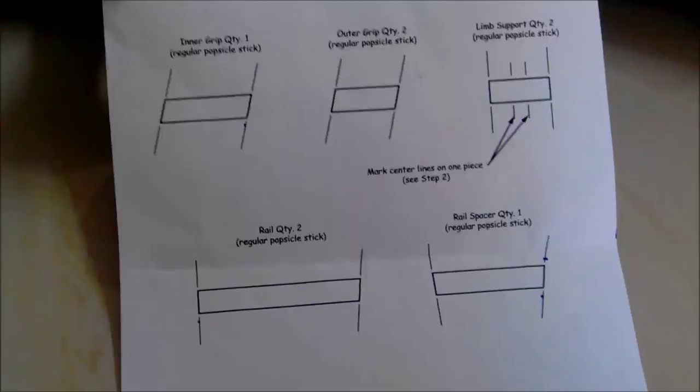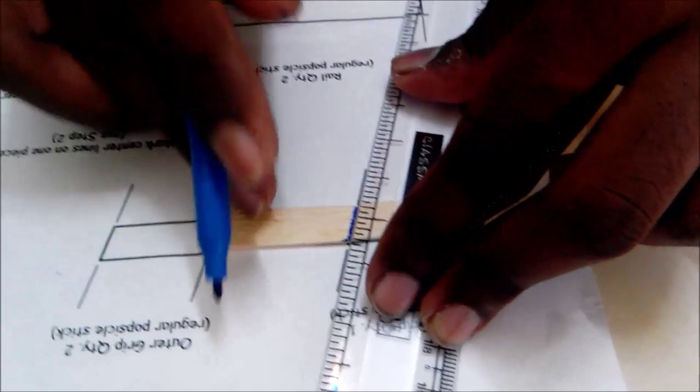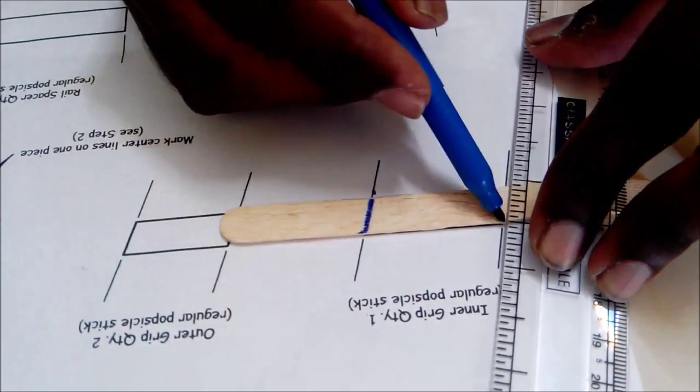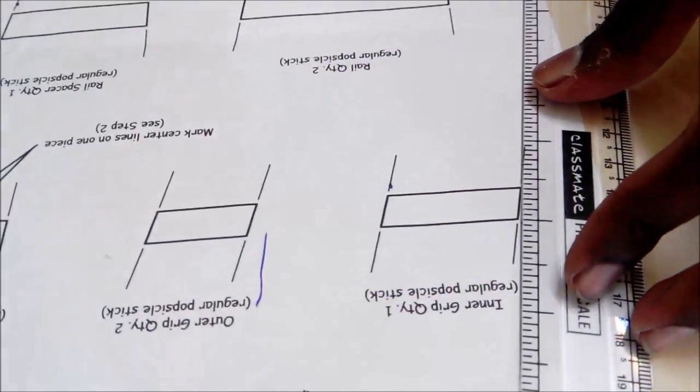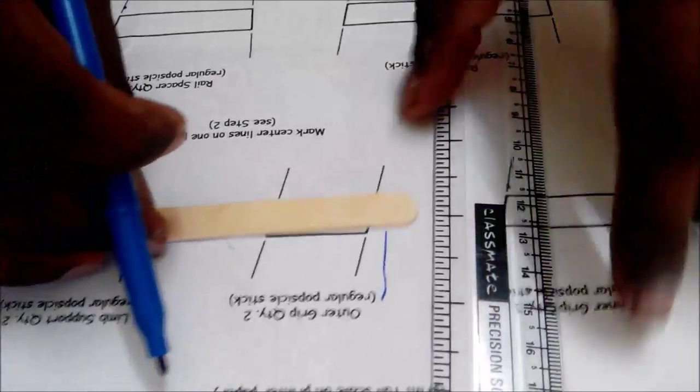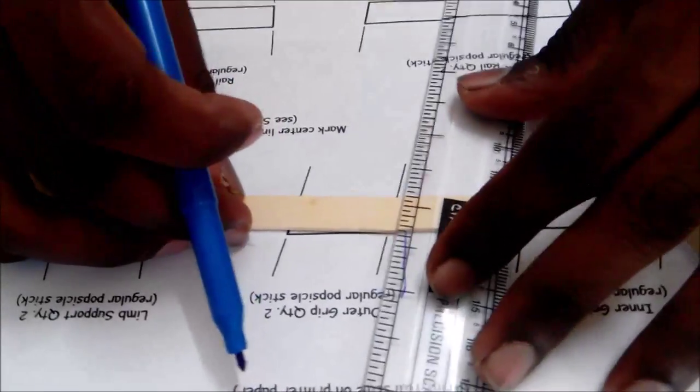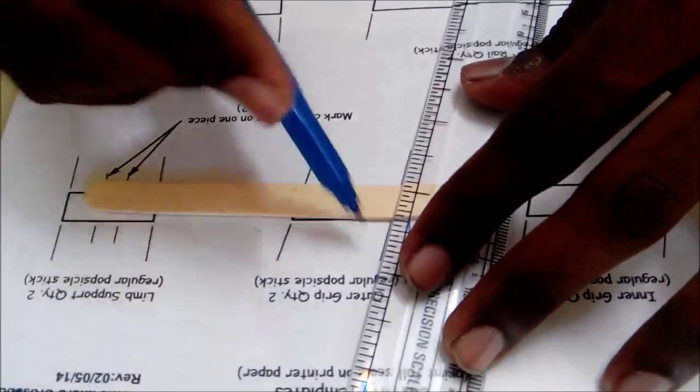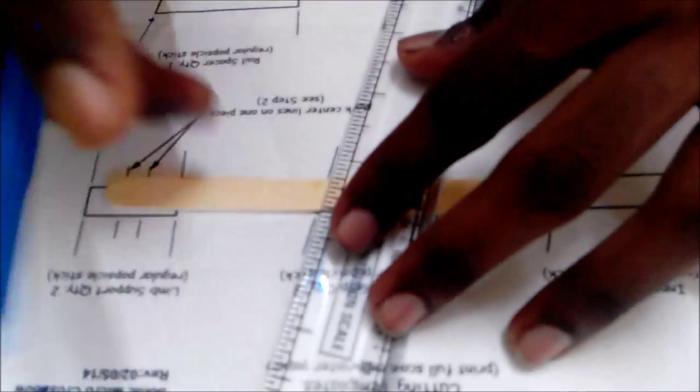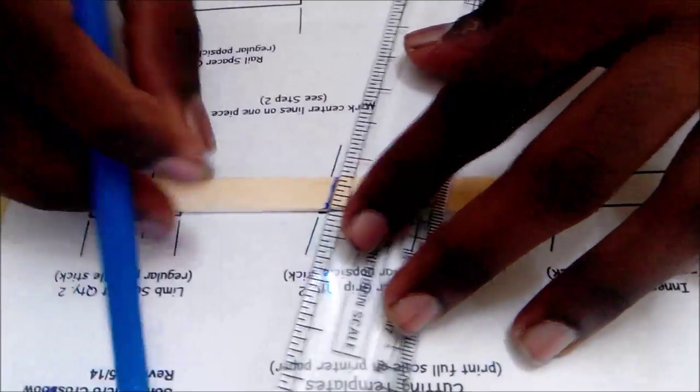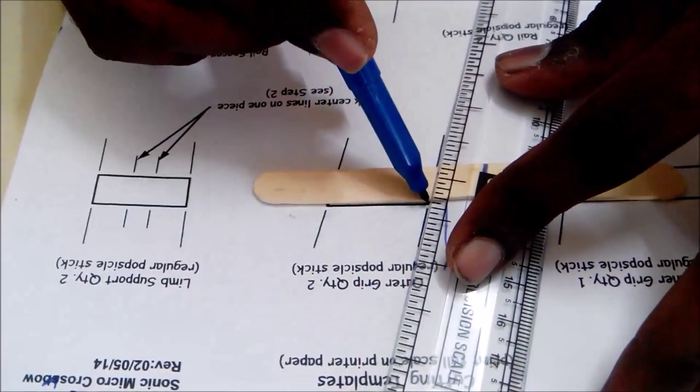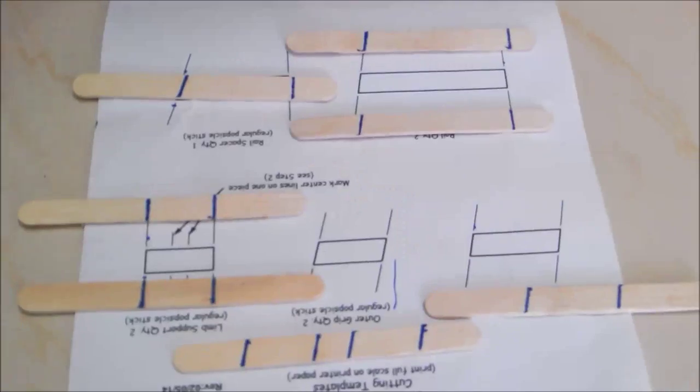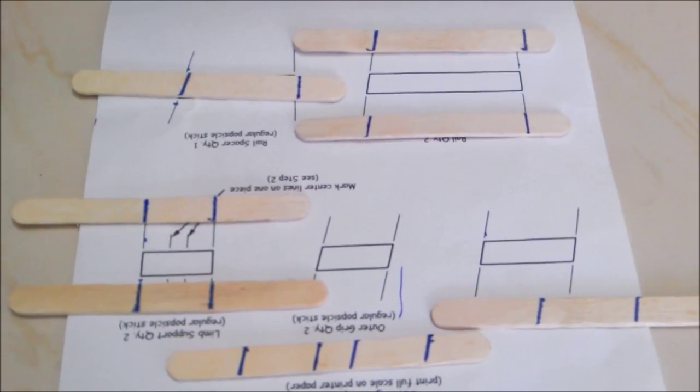Step one: mark the popsicle stick with the pencil along the lines so that you can get accurate measures. That will make it easy, that would help you to do the crossbow more easily and swiftly. This is how you do it. You should do all of this and then finally you reach to a stage like this.